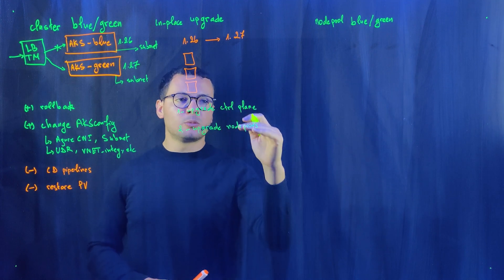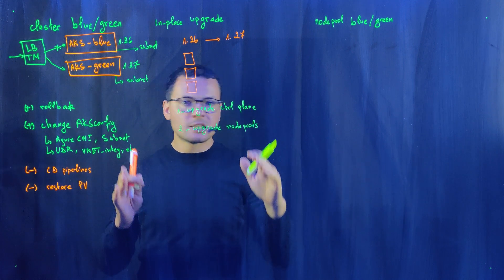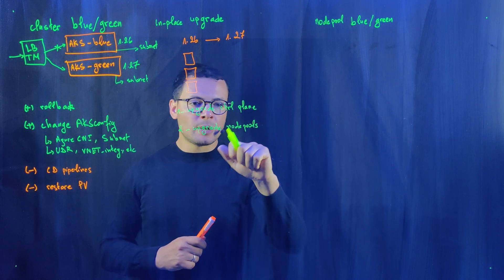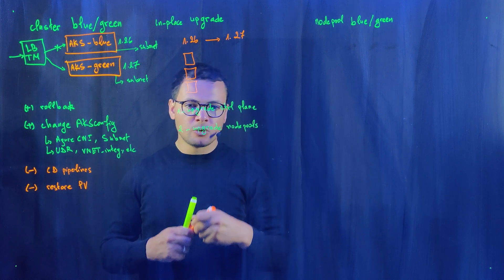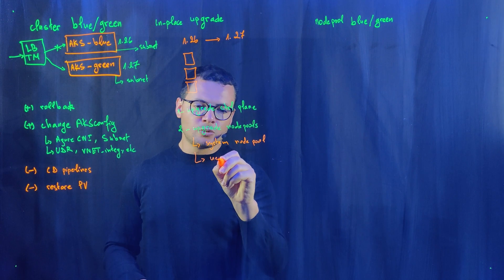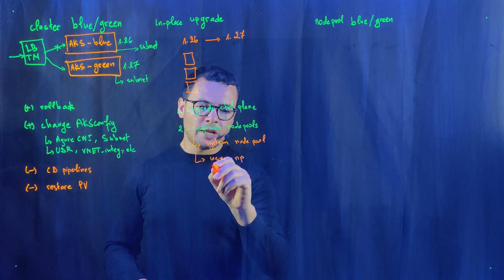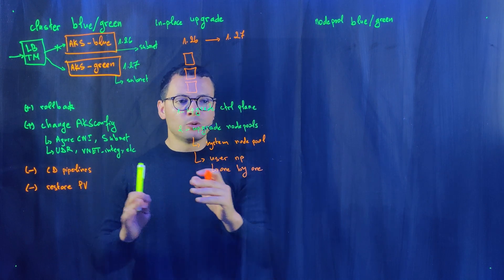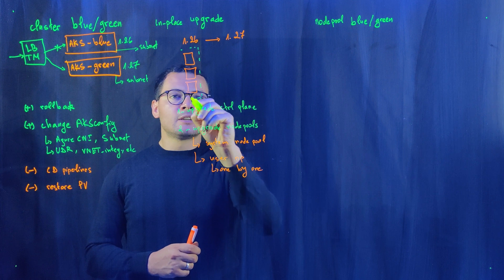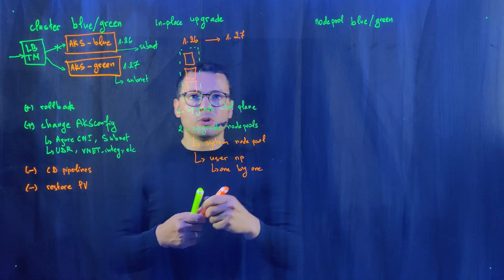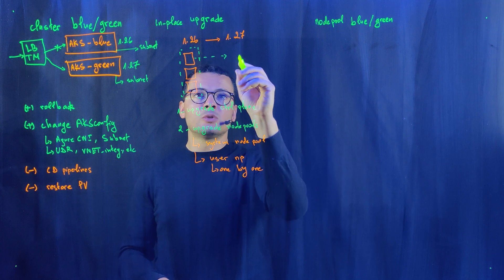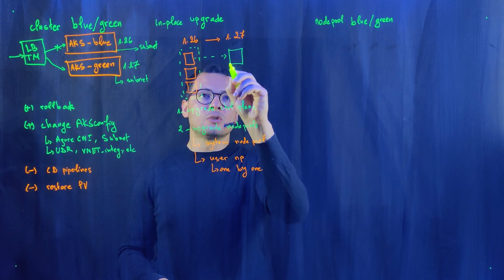We divide the upgrade into two steps: first, we upgrade the control plane managed by AKS — managed by Azure — where there is almost no risk. Then I upgrade my node pools one by one, typically starting with the system node pool and then moving to the user node pool. Each time AKS upgrades a node pool, it takes the VMs one by one, starting with the first VM and upgrading it to version 1.27.